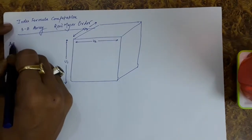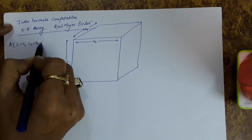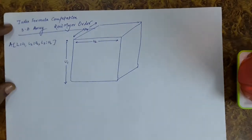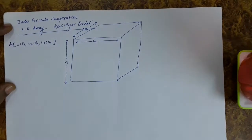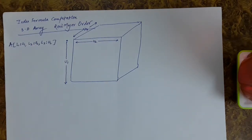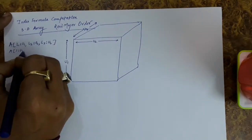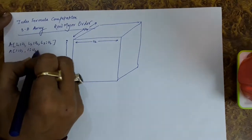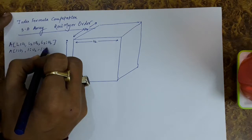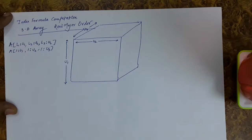The array is a, with l1 to u1 for the first dimension, l2 to u2 for the second dimension, and l3 to u3 for the third dimension. For the assumptions we have taken earlier for 2D and 1D arrays: the first index starts from 1, the second index also starts from 1, the third index also starts from 1, and every element requires 1 byte for storage.